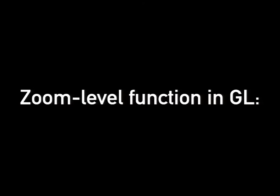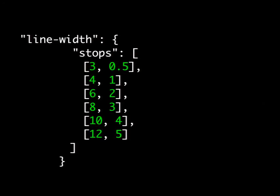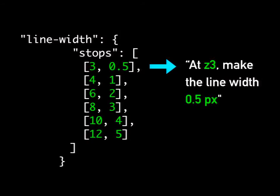Zoom level styling works a lot differently in GL. In GL, you style with functions that describe how a value changes across your zoom levels. A function is just an object with a stops key — an array of arrays. Each array is a pair of values: the first describes the zoom level, the second describes the value of the property. So zoom level 3, the value is 0.5, all the way down to zoom level 12, the value is 5.